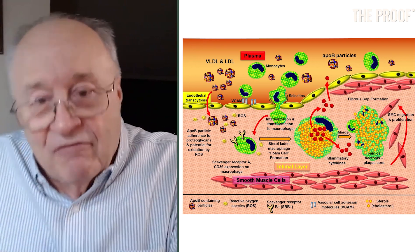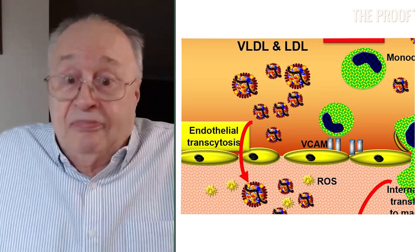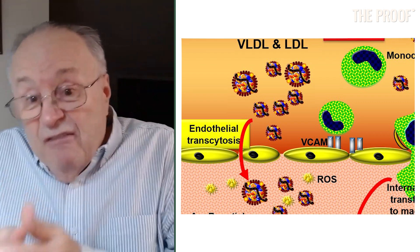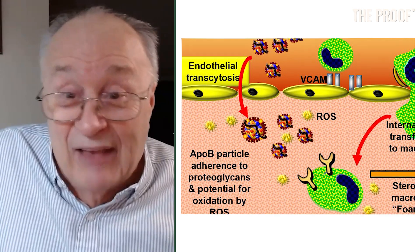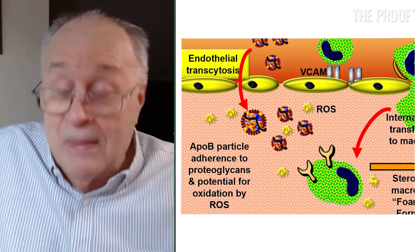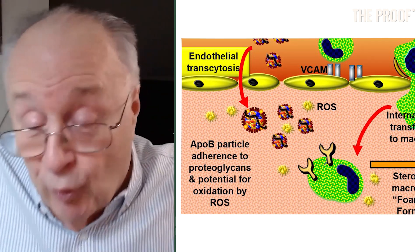That ApoB protein on the surface of the particle has great affinity for connective tissue molecules — glycoproteins that bind the ApoB particle. It's like flies on fly paper. It's stuck. Now, sometimes it's just stuck there and nothing ever happens. Very few of them break free and can leach out again back into the plasma, perhaps a minuscule number. But once they crash there, they're stuck in the arterial wall.